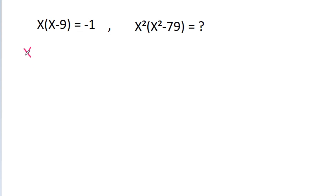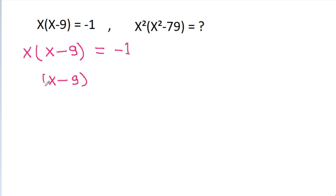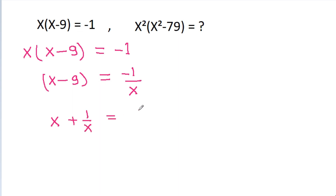So we have x times (x minus 9) is equal to minus 1. That means x minus 9 will be equal to minus 1 by x, and it is x plus 1 by x is equal to 9.